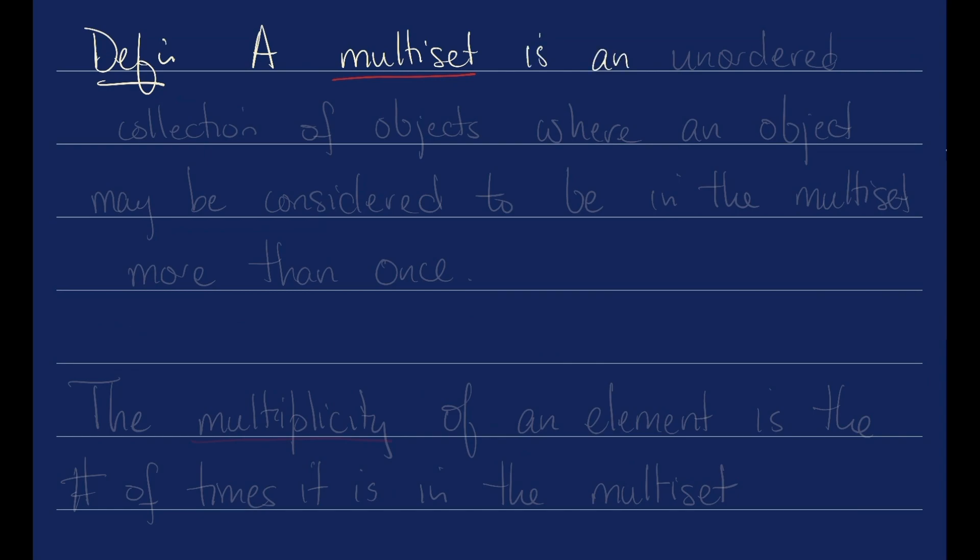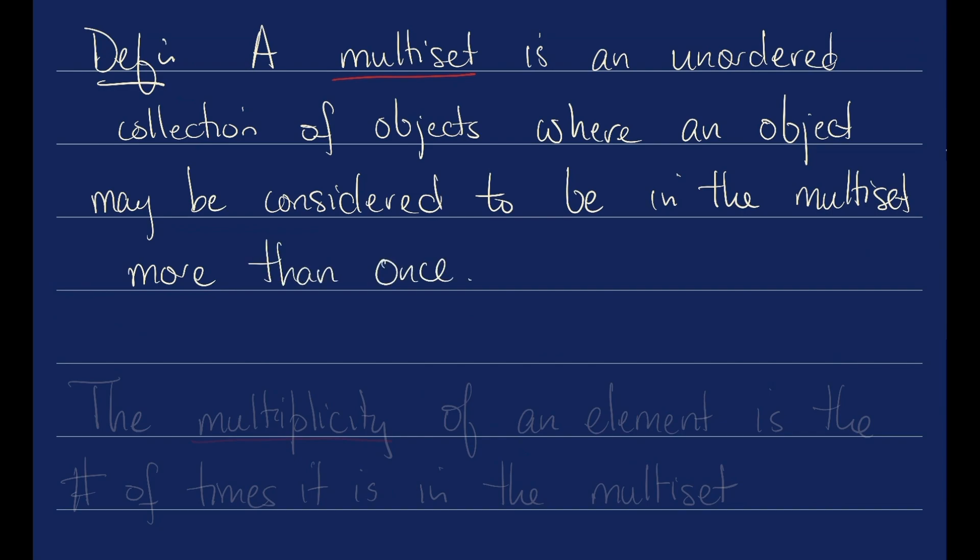A multi-set is an unordered collection of objects where an object may be considered to be in the multi-set more than once. Tied to this is another notion of multiplicity. The multiplicity of an element is the number of times it is in the multi-set.